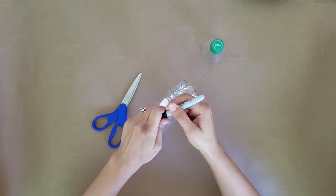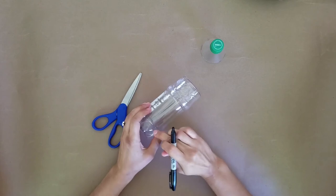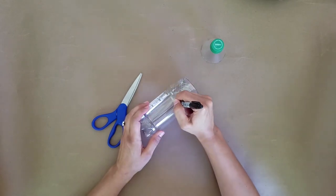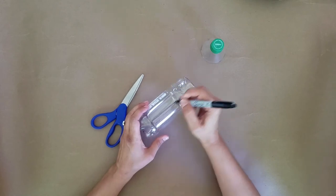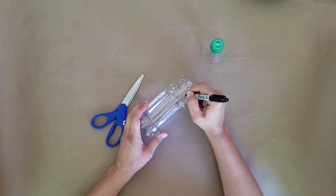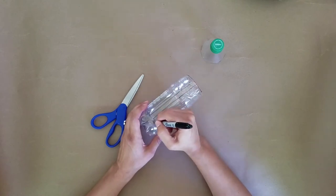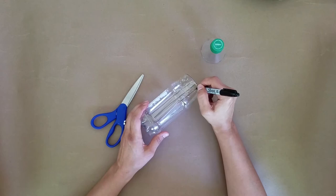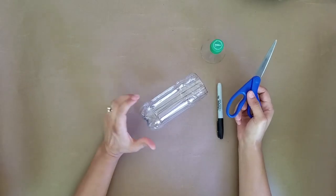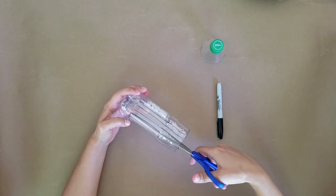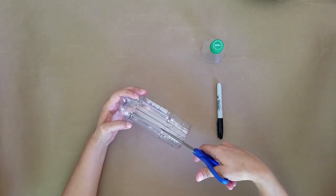Then you can take your marker and you'll begin to draw a series of lines all along the side of your bottle. You can try to space these lines out as evenly as possible, but it doesn't have to be perfect. You can make these as wide or as thin as you like. Now that you have all your lines drawn, you can begin to cut along these lines, leaving the bottom portion of the bottle uncut.